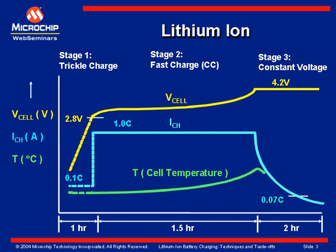The fast charge current should be less than or equal to 1 C. Often, in linear chargers, the current is ramped up as the cell voltage rises in order to minimize heat dissipation in the pass element. The drawback to this is an extended charge cycle time.